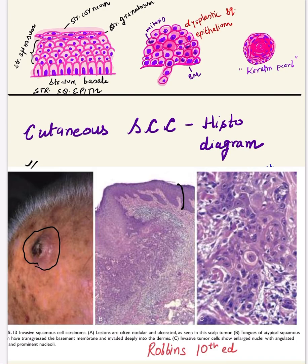Hello and welcome. In the last video I talked about the basics of cutaneous squamous cell carcinoma. Knowing how to draw the diagram of squamous cell carcinoma is equally important. This is the diagram given in Robbins, showing the gross and microscopic features. Here you see the scalp, a sun-exposed area and a common site for cutaneous SCC, showing a nodular ulcerated growth — this is how squamous cell carcinoma manifests grossly.